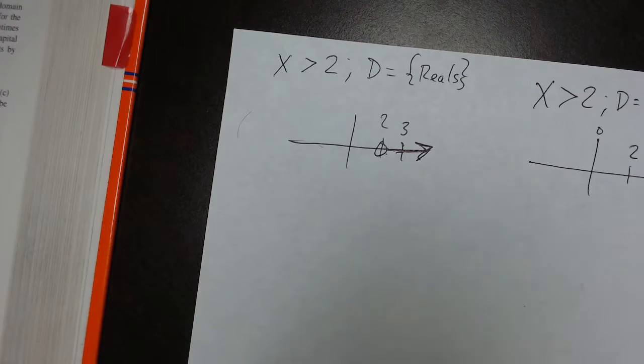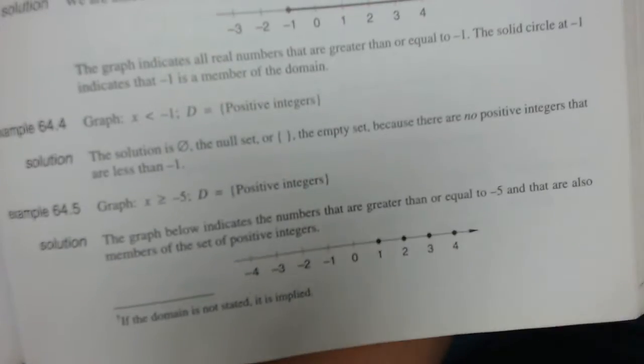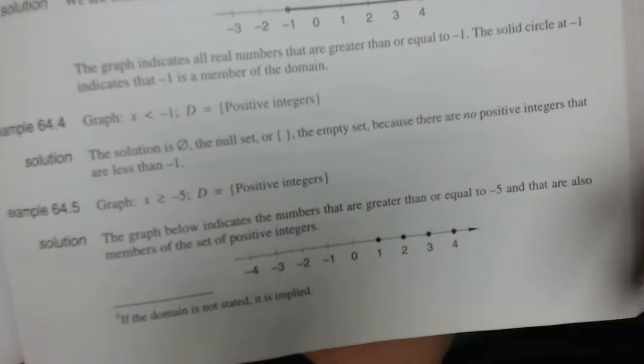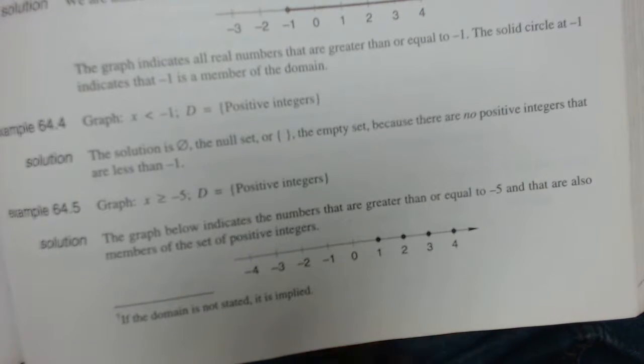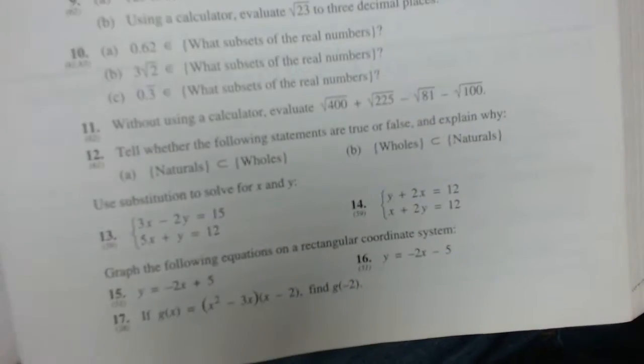And they can put other domains on your number set. Like here we see positive integers, or sometimes they may say negative integers. And when we get that domain, we just represent it by putting dots, or closed dots.